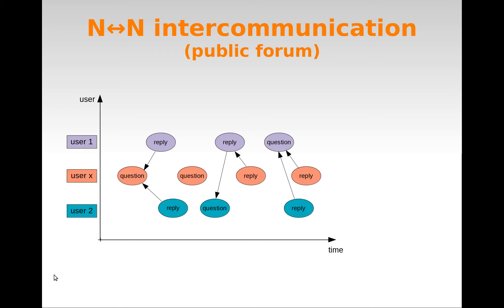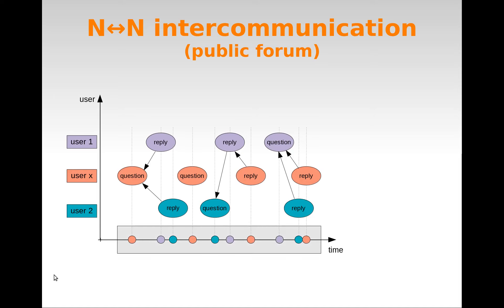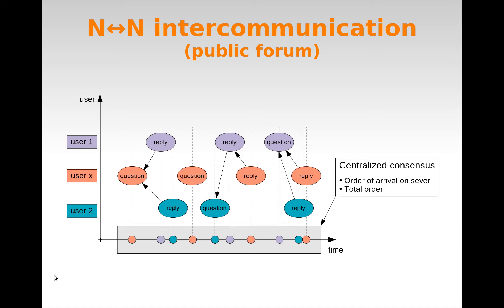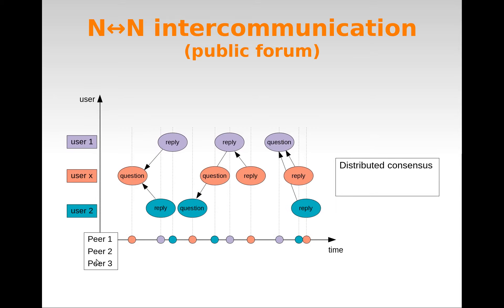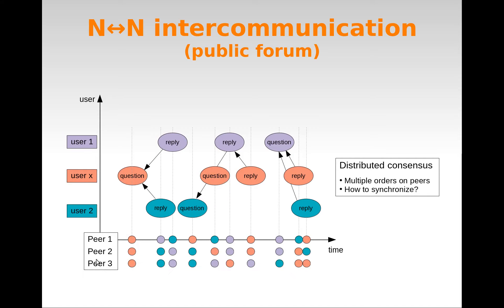In a centralized system such as Stack Overflow, these posts can be projected over time and ordered by arrival time. It's easy to obtain a total order of messages in a centralized system. With total order, each message has exactly the same position in all peers. But in a decentralized system, issues such as latency and connectivity can lead to different orders of delivery in each node of the network. Hence, how to synchronize these peers over time?